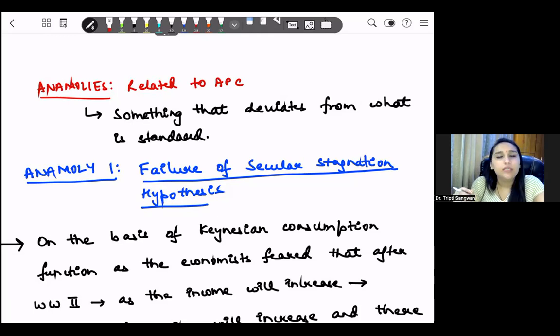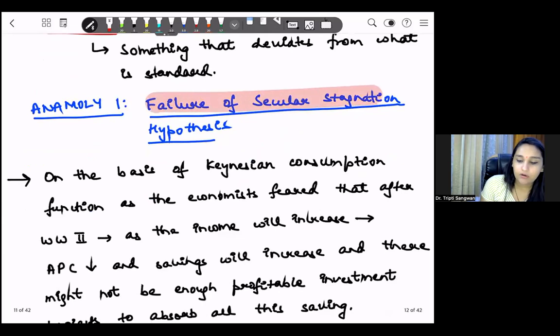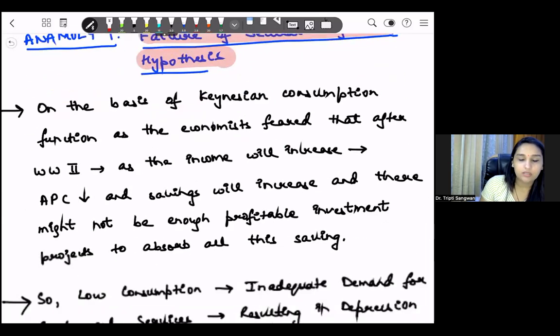Let us also discuss the anomalies. Anomalies is something that deviates from what is standard. So income is the most important factor to determine our consumption. But, there are some data analyses, some empirical studies, which show that these three conjectures may have different results. So these anomalies are about that, and they particularly relate to APC. And on that basis we explain the consumption puzzle.